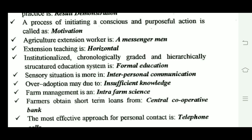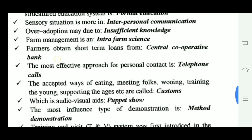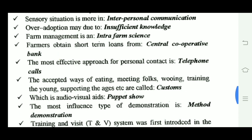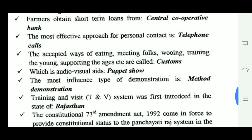Over-adoption may be due to insufficient knowledge. The most effective approach for personal contact is telephone contact. Accepted ways of eating, knitting, folk, owing, and training — supporting the edges — are called customs.